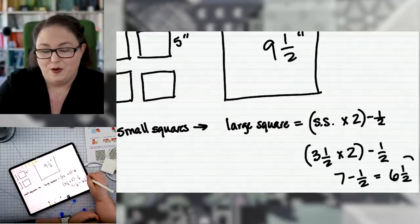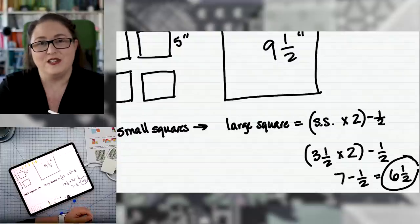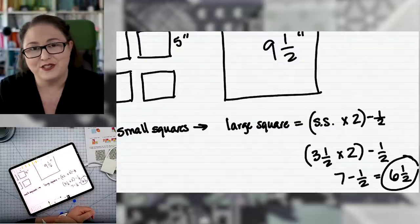equals six and one half. And that will be the perfect size square to cut to make flying geese units with all of those three and a half inch squares that you already have.